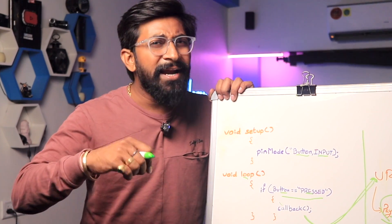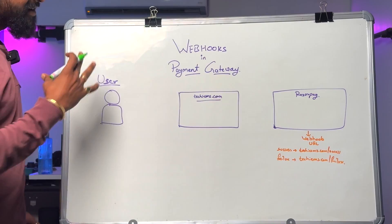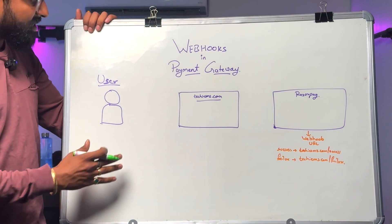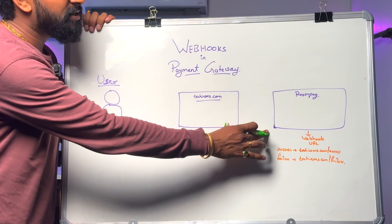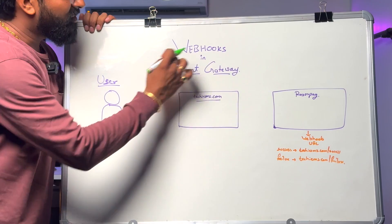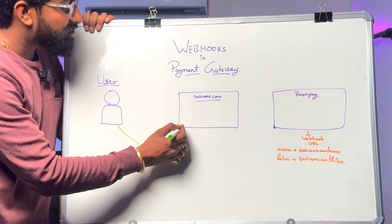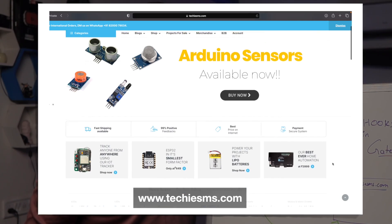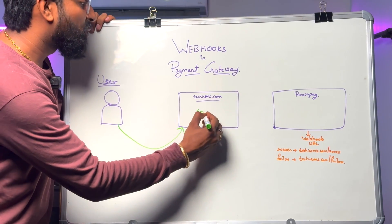Now, where is webhooks useful? Here's a practical use case. We have three things: the user, techiesms.com which is an e-commerce website, and Razorpay which is the payment gateway. As a user, you go to techiesms.com to purchase electronic components. For example, a user is buying something worth 1,000 rupees.